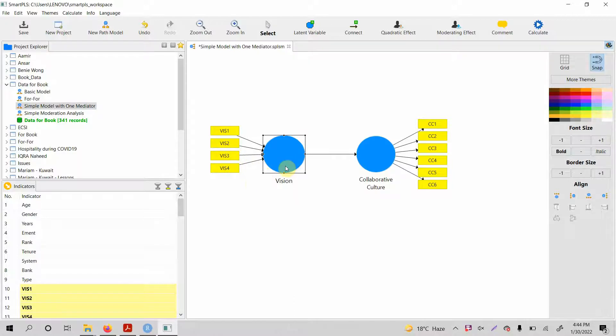Let's say vision is our formative model formed by 1, 2, 3, 4 indicators. Now let's say we have run our collinearity diagnostics, we have seen our indicator weights and we have assessed our loadings as well. Now if there is an issue with any of these statistics, what should I do? Shall I remove these indicators or not?